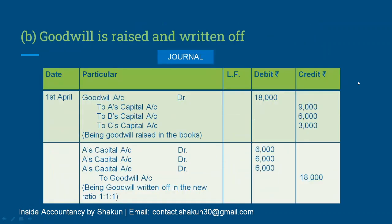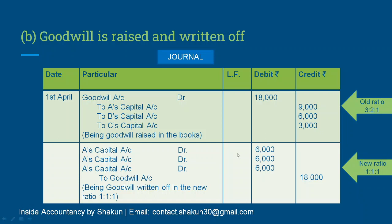Moving on to Method 2 — when goodwill is raised and written off. When we raise the goodwill we raise it in the old ratio. So goodwill amount 18,000 is debited and distributed between partners A, B, and C in the old ratio of 3:2:1. Then the goodwill is written off in the new ratio of 1:1:1 — partners A, B, and C to goodwill account. So goodwill is first raised in the old ratio and then written off in the new ratio.